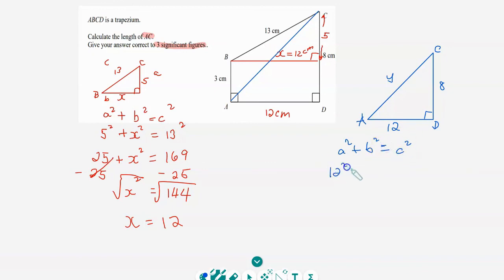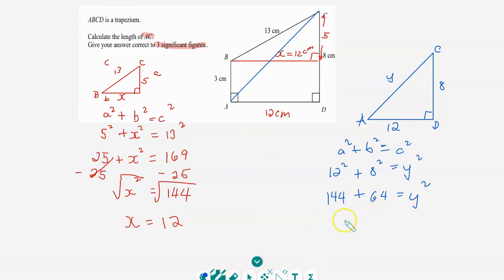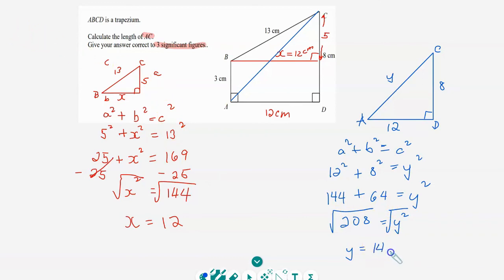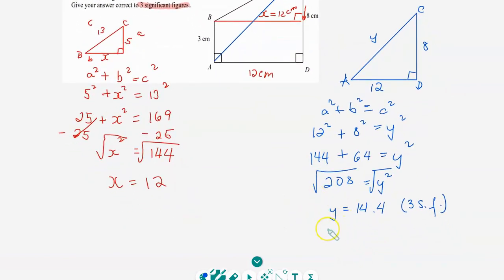So a is 12 and b is 8, equal to y squared. Twelve squared is 144, and eight squared is 64, equal to y squared. Adding them gives 208, so y² = 208. Taking the square root of both sides: the square root of y² is y, and the square root of 208 is 14.4 rounded to three significant figures. Since y is side AC, AC equals 14.4 centimeters.